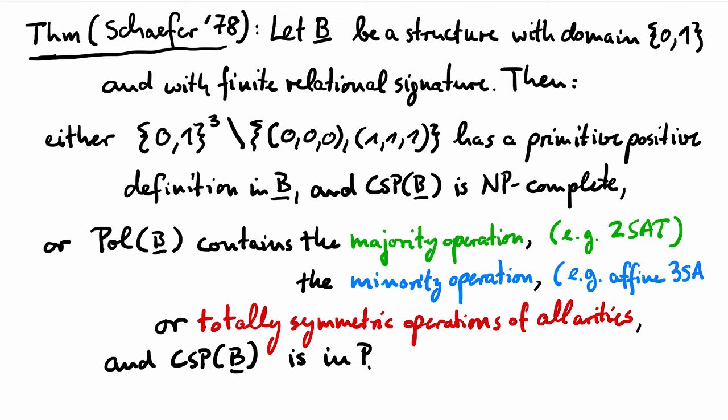Finally, if pol(B) contains totally symmetric operations of all arities, then it is not difficult to adapt the arc consistency procedure that we have introduced for directed graphs, and to prove that the arc consistency procedure solves CSP(B). This captures in particular HORN 3-SAT. So in each of the three cases, we have already seen a polynomial time algorithm. The challenge is to prove that if none of those polymorphisms exist, then the not-all-equal relation is indeed primitively positively definable.